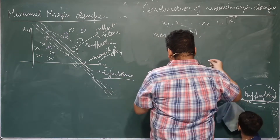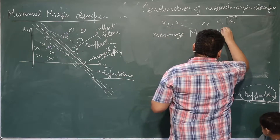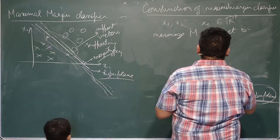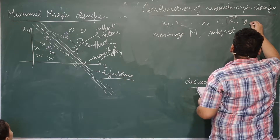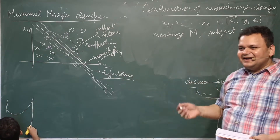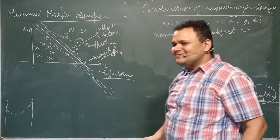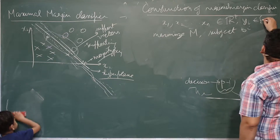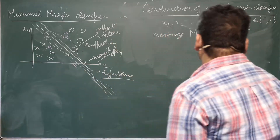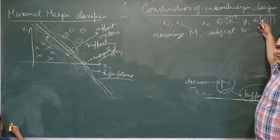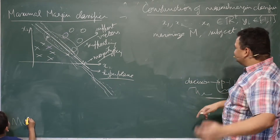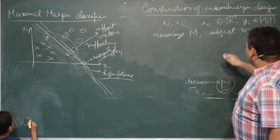We want to maximize M, subject to the following conditions. yᵢ belongs to {-1, +1} for binary classification — we use minus one and one because it makes our life mathematically simple. It is not wrong to call one of the classes as minus one.